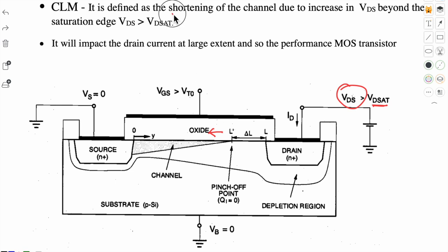It is defined as the shortening of the channel due to increase in VDS beyond saturation edge, means VDS is greater than VDS saturation. So it is going to impact the drain current also. We have to study this.